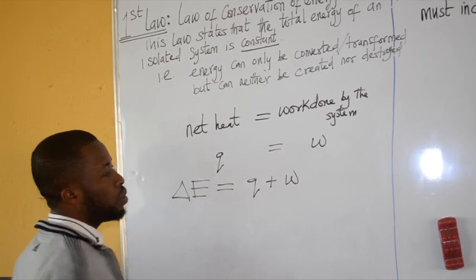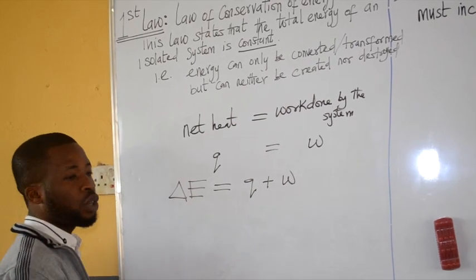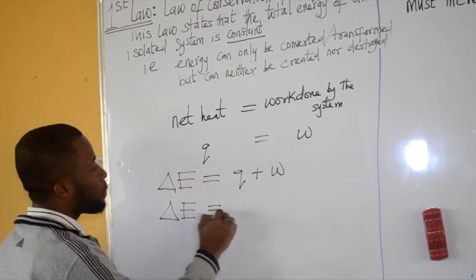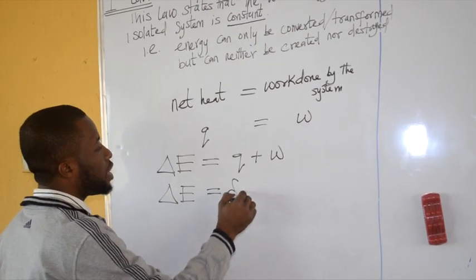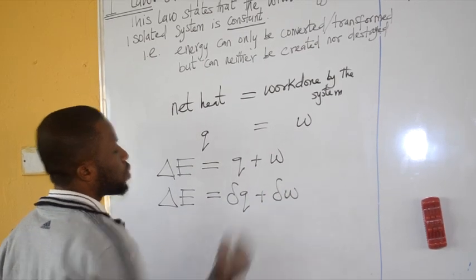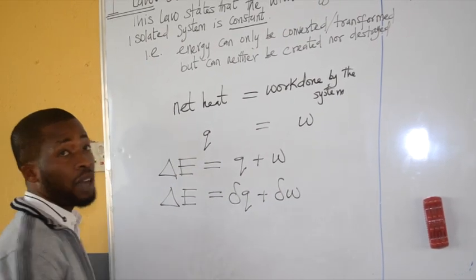Q and W are inexact functions, so we can actually use the partial derivative for Q and also for W because they do not have initial and final values.